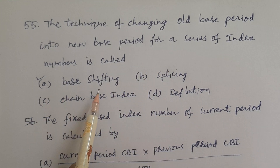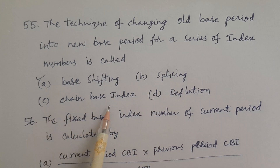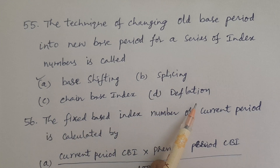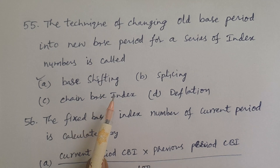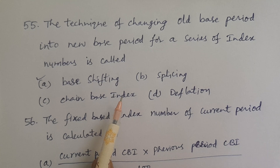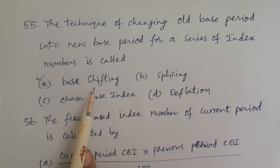Options: A. Base shifting. B. Splicing. C. Chain base index. D. Deflation. The answer is base shifting. If you have shifted old index numbers with an old base period to a new base period for one particular series of index numbers, then that procedure is called base shifting.